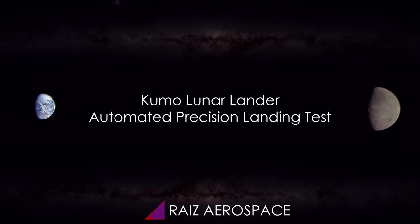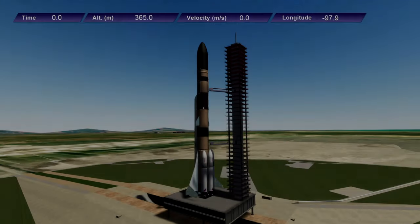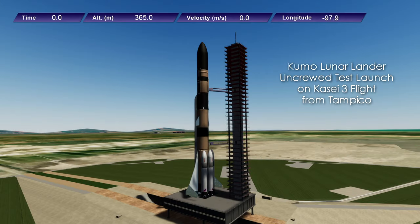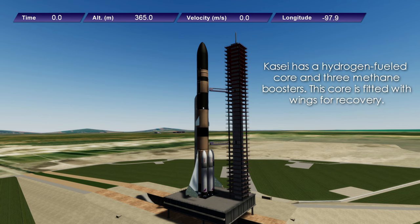Hello everyone, welcome to the commentary version of Razer Space Simulating a Space Future 3. In this video I aim to launch the Kumo lunar lander to the moon with an automated script, landing it on the moon at a precise location.